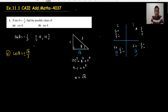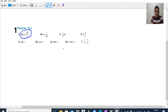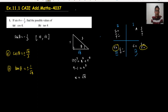Moving to part B, to find the value of tan theta. Tan theta — just find the value from the triangle: opposite upon adjacent, so 1 upon under root 8. In the third quadrant, tan is positive; in the fourth quadrant, tan is negative. So we have to write plus minus 1 upon under root 8, giving two answers — one in the third quadrant, one in the fourth quadrant. We have done question number 1.